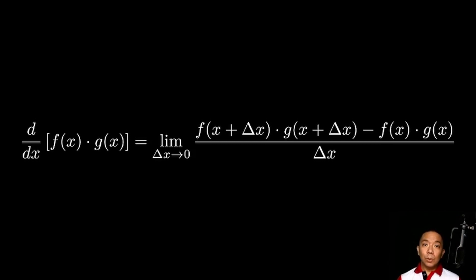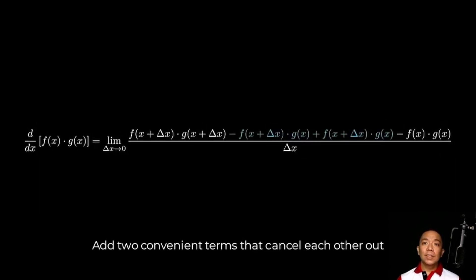What we'll do is add zero in a special way sa numerator. Paano special way? Mag-a-add tayo ng dalawang terms na ang values mag-a-add up to zero. And these two terms are negative f of x plus delta x times g of x plus f of x plus delta x times g of x. So negative nung isa yung isa. They add up to zero. So this means that walang nagbago sa value nung numerator natin.